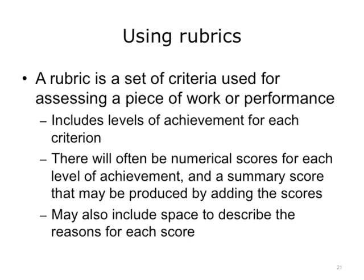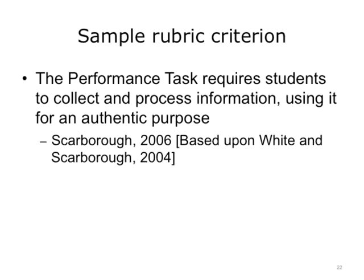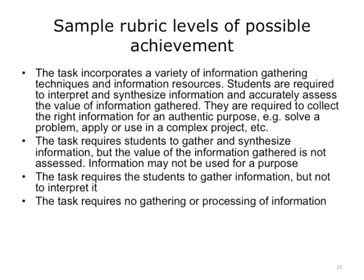A rubric is a set of criteria used for assessing a piece of work or performance. It also includes levels of potential achievement for each criterion, and there will often be numerical scores for each level of achievement and a summary score produced by adding the scores for each criterion. The rubric may also include space to describe the reasons for each score. Here's an excerpt from a performance task rubric, showing one criterion and the corresponding levels of possible achievement, listed from highest to lowest.